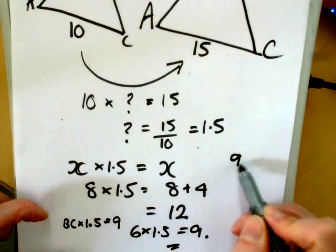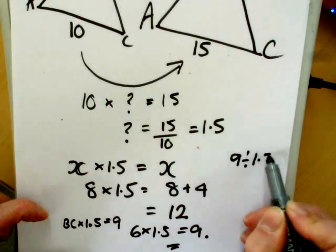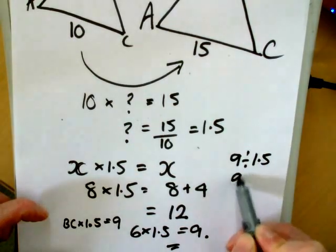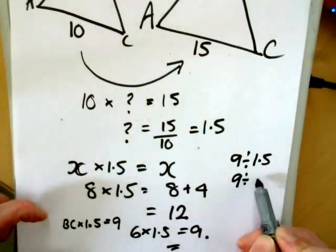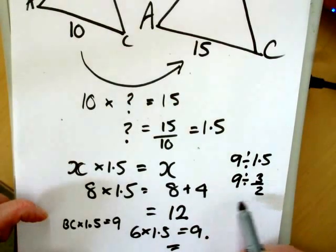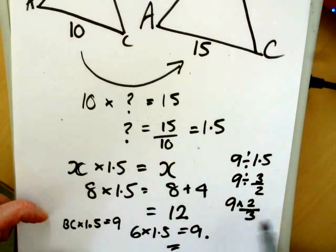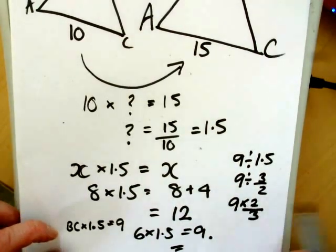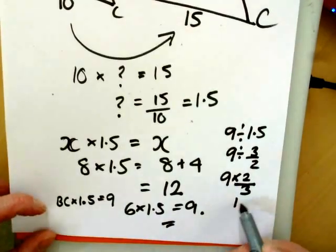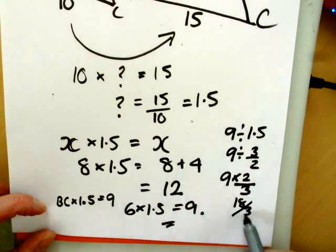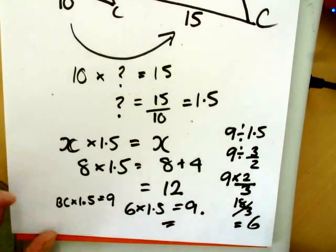You could have tried to do 9 divided by 1.5. It's not very easy like that. But if we write it as 9 divided by 3 over 2, and then we turn it into a multiplication by doing 9 times 2 over 3, then we'd get 18 divided by 3, then we'd get 6 that way.